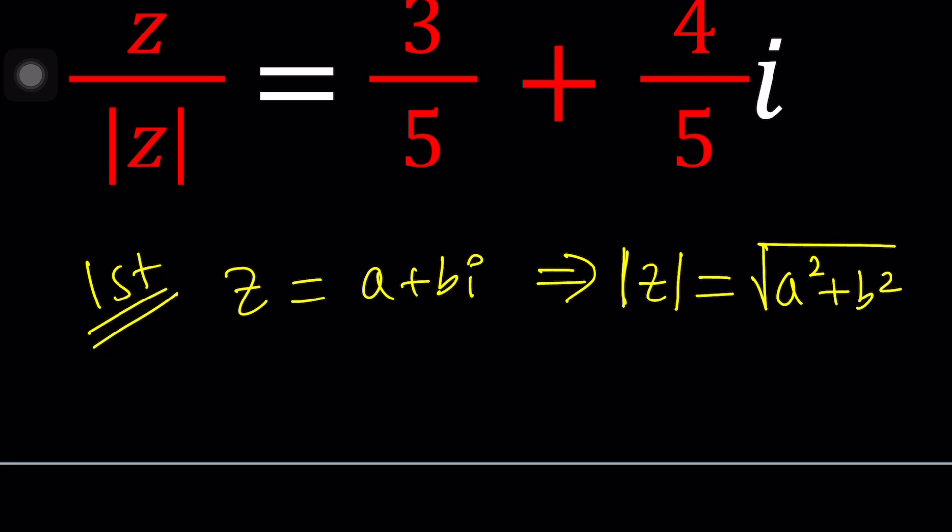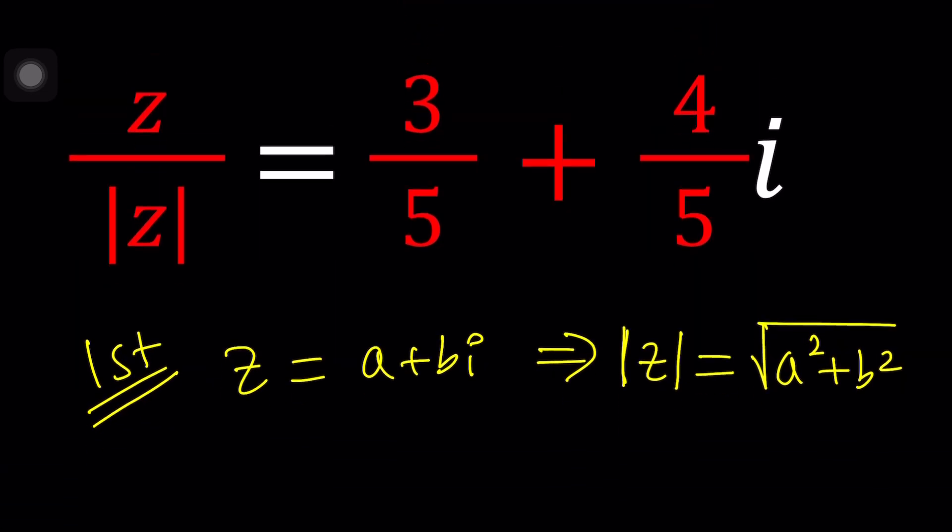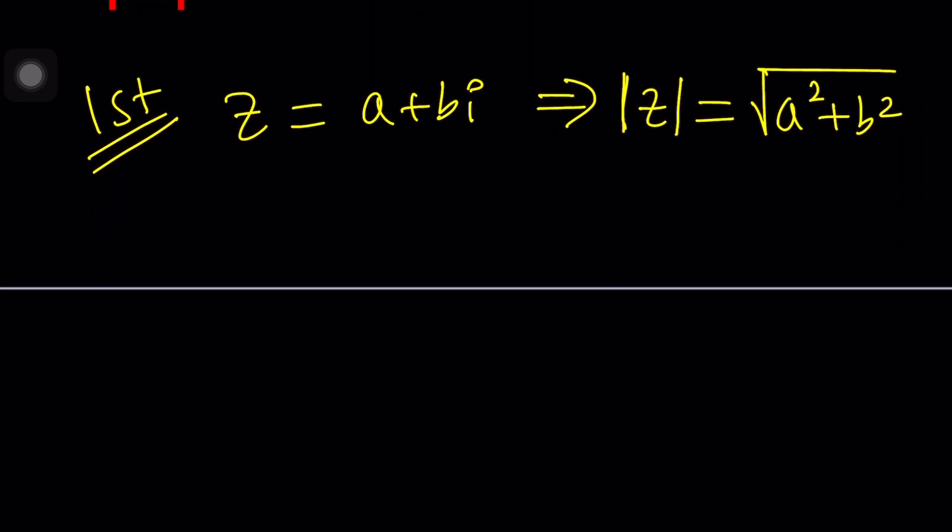It implies that if z equals a plus bi, absolute value of z, which is the modulus, is going to be the square root of a squared plus b squared. Awesome. Now we have a single equation, so be careful, but you have two variables. What is that gonna make? Let's see. Okay, I just couldn't think of the word. So let's plug it in. We have a plus bi divided by the square root of a squared plus b squared equals 3/5 plus 4/5 i. Great.